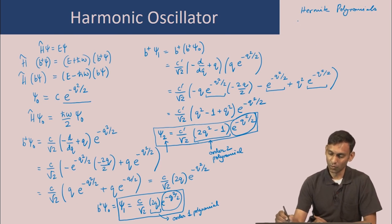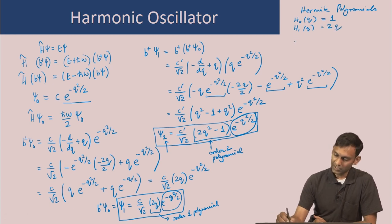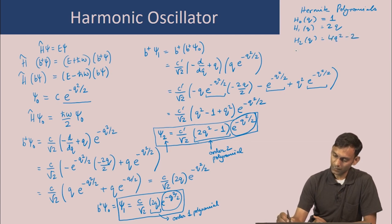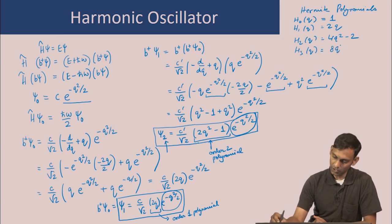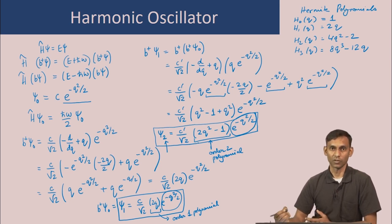Some of the lower Hermite polynomials have the following functional forms: H₀(q) = 1, H₁(q) = 2q, H₂(q) = 4q² − 2, H₃(q) = 8q³ − 12q. These forms can easily be looked up in any textbook on spectroscopy or quantum mechanics.